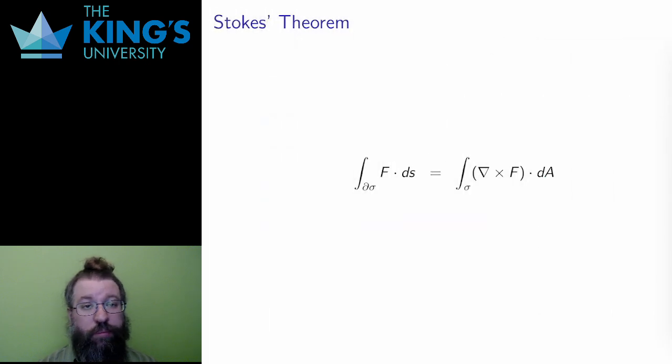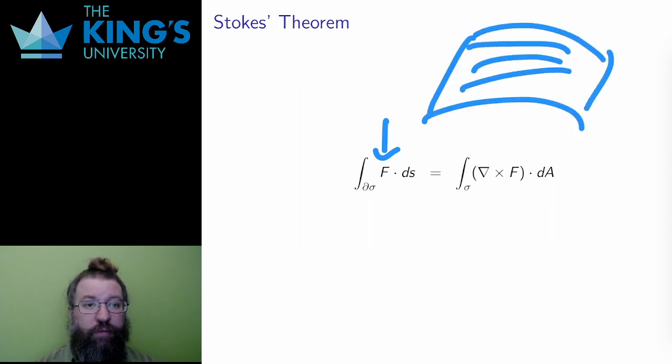I'll start with Stokes' theorem. Let f be a vector field in R3, and sigma be any orientable surface. Then the integral of the field over the boundary of the surface is the same as the integral of the curl of the field over the whole surface.